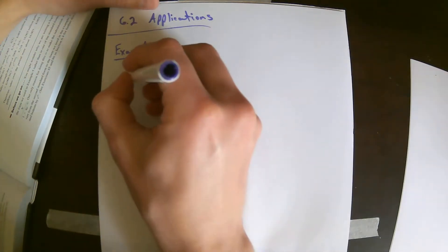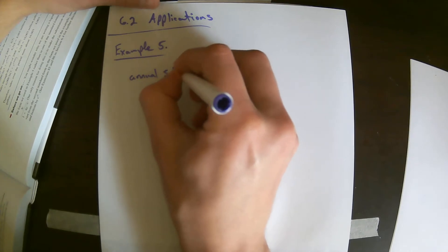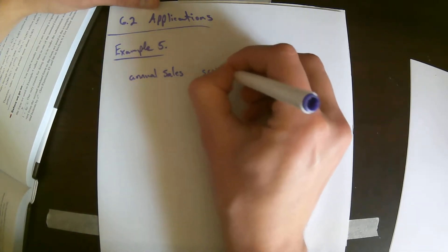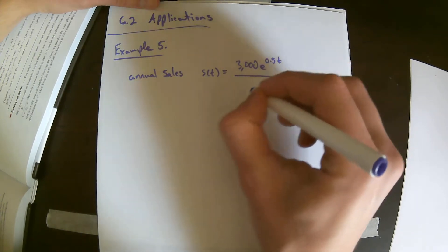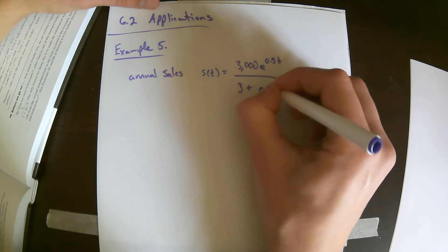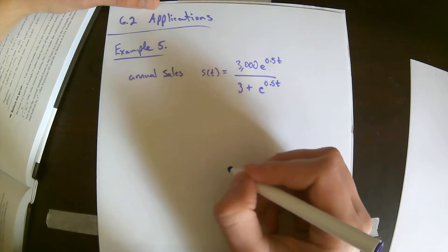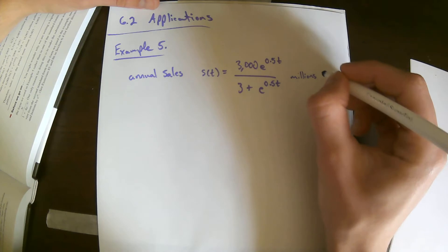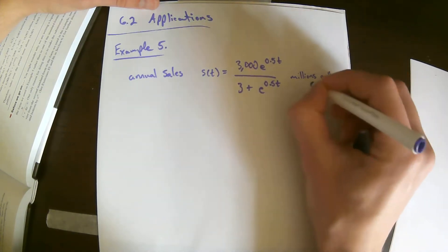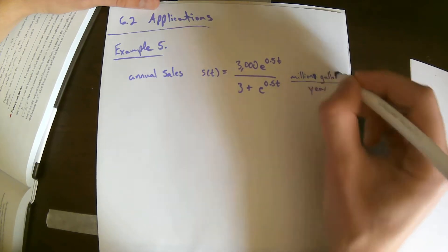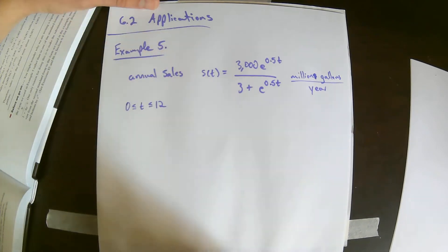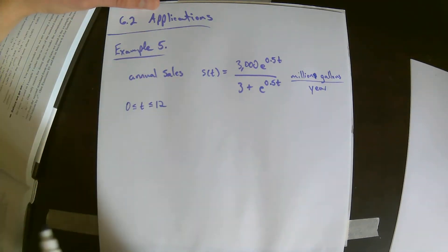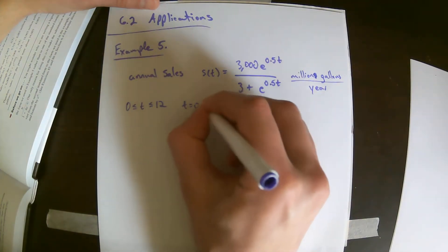Example 5 from the text says annual sales of bottled spring water for pets can be modeled by the logistic function. Annual sales — that's a rate of sales per year. S of t equals 3,000 times e raised to 0.5t, over 3 plus e to the 0.5t. This is measured in million gallons per year, and the domain is 0 to 12, where t is time in years and t equals 0 corresponds to the year 2000.